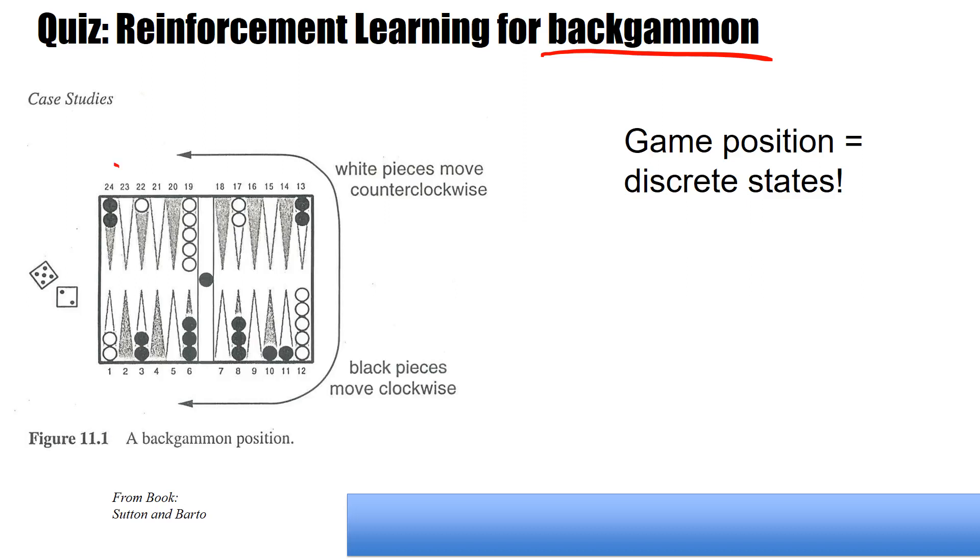So we have 24 fields and there is a black player who plays the black pieces and a white player. Each player here has 15 pieces and these pieces can be put one or several on these different fields.